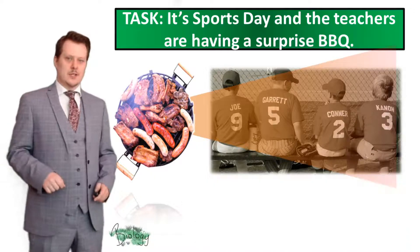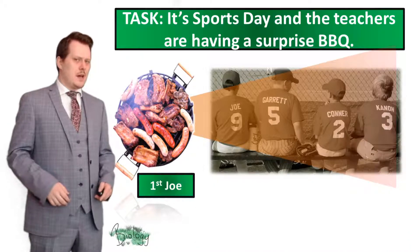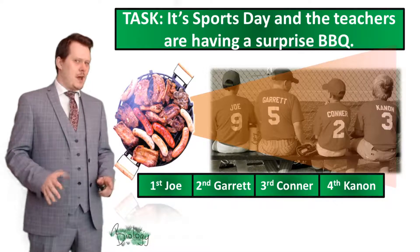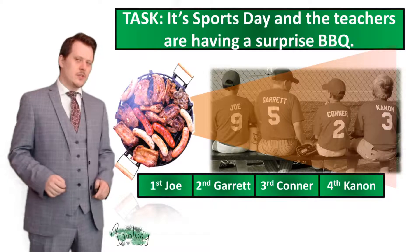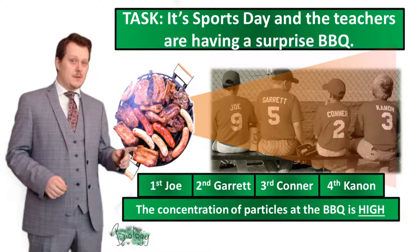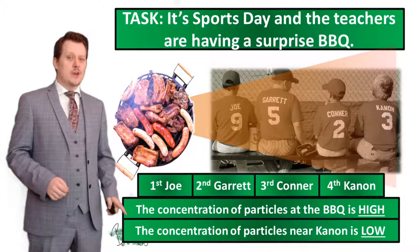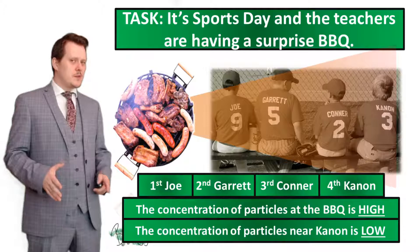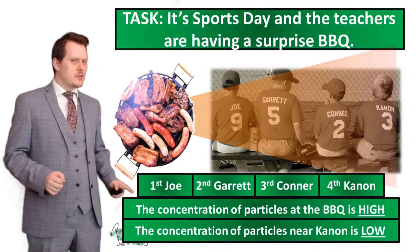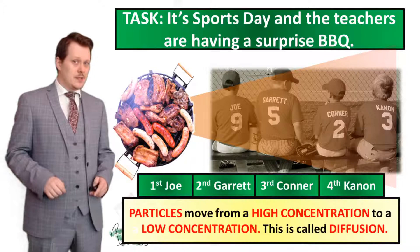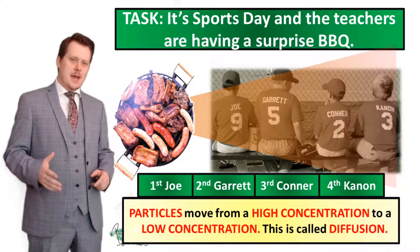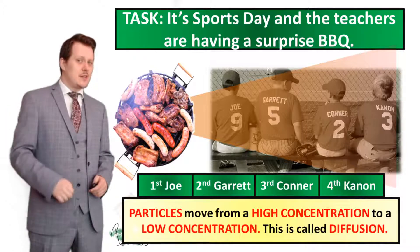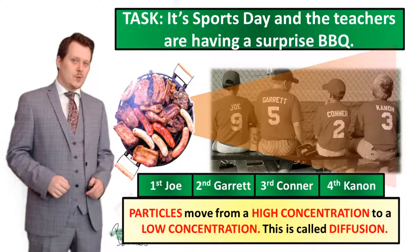The student to smell it first is going to be Joe, then Garrett, then Connor, then Cannon. The concentration of particles at the barbecue is high; the concentration of particles near Cannon is low. Now that we've established where concentration is high and low, we can say that diffusion particles will move from an area of high concentration to an area of low concentration down its concentration gradient. This is called diffusion.